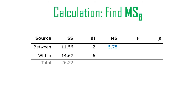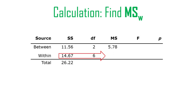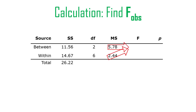Now we need the mean square between: sum of squares divided by degrees of freedom. That's 11.56 divided by 2, which equals 5.78. Once you have the sum of squares, you're done with the raw data — you just work from the table with simple arithmetic. The mean square within is 14.67 divided by 6, which equals 2.44. It's going to be a close one — that's almost 3, so the F ratio will be around 2. Remember F critical was about 10, so I don't think that's going to reach significance.